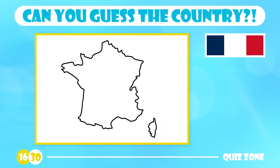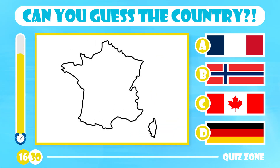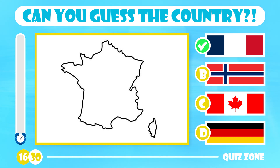Guess this country. Is it France, Norway, Canada or Germany? The answer is France. France is located in western Europe, home to over 66 million people. The country has long been a world center of trends in art, food, philosophy and science.